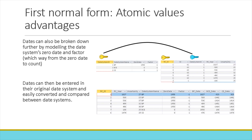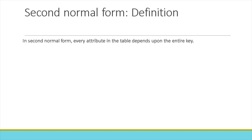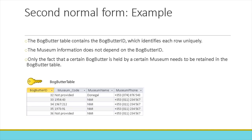Now that we've got a handle on first normal form, what is second normal form? In second normal form, every attribute in the table depends upon the entire key. This seems intuitive with a single column key, but it may not be if the key is composed of more than one column. For example, in the bog-butter table which contains the bog-butter ID identifying each row uniquely, the museum information does not depend on the bog-butter ID — only the fact that a certain bog-butter is held by a certain museum needs to be retained in the bog-butter table.